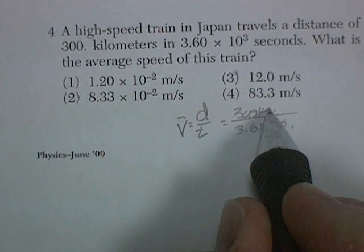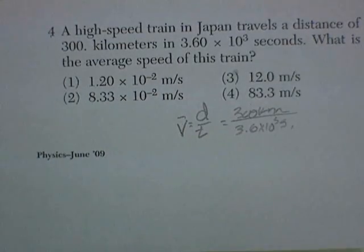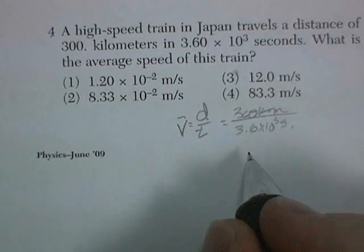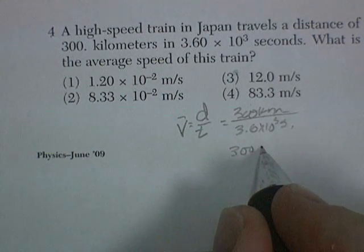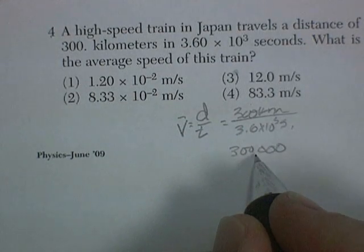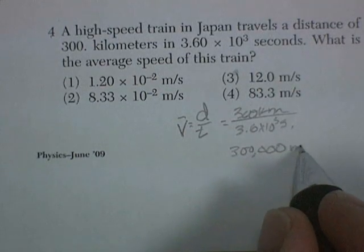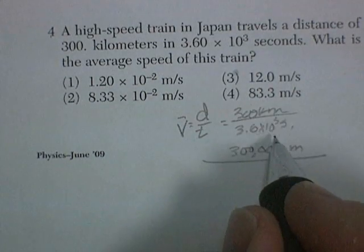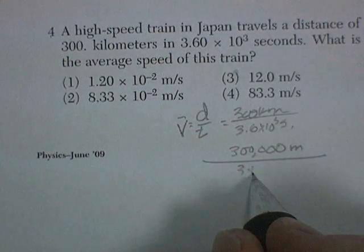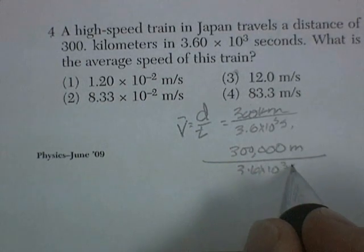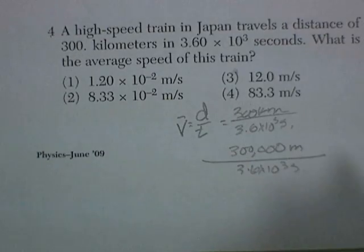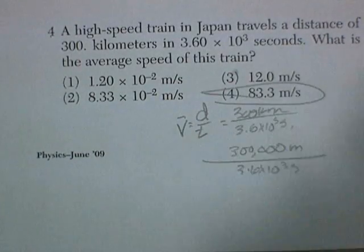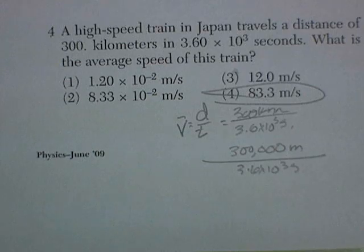Meters per second. I've got 300 kilometers, which is why I keep putting my units down. Well, a kilometer is 1,000 meters. So that's 300, 1, 2, 3. That's 300,000 meters. And let's see, 3.6 times 10 to the 3 seconds. Now I get out my calculator. And I come up with about 83.3 meters per second. Pretty cool.